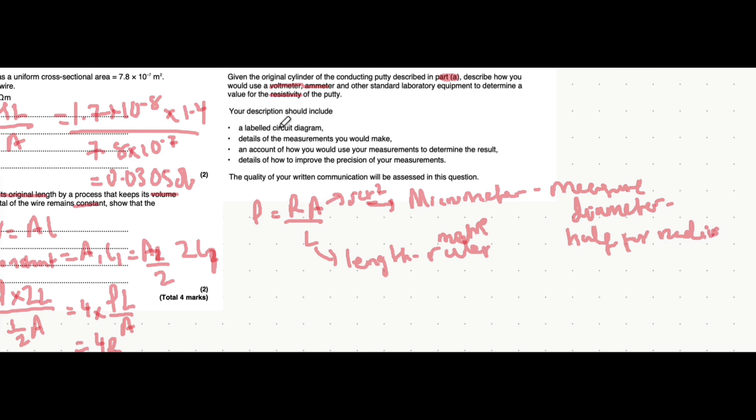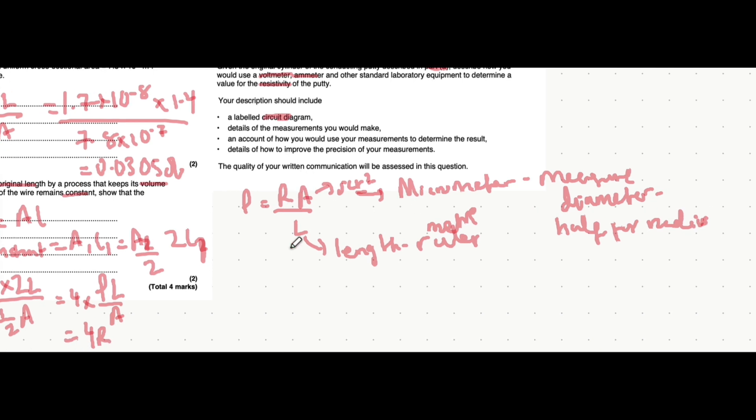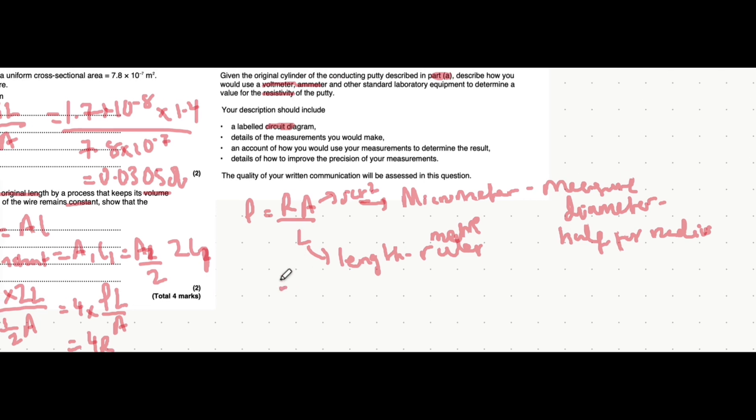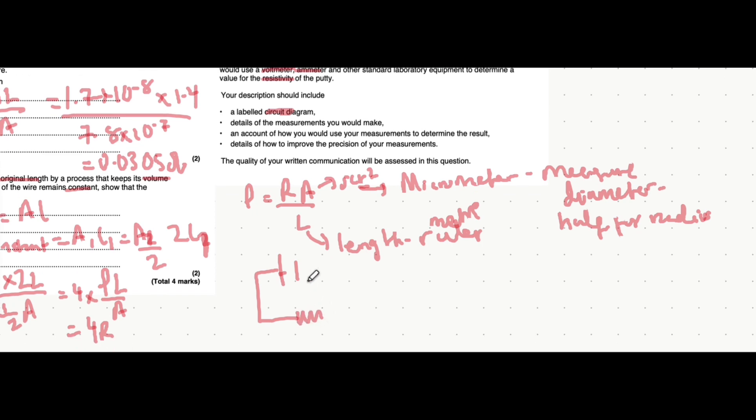That's that dealt with. How about resistance? Well, that's where the labeled circuit diagram comes in. Because, what we can do is, we can have the putty. Let's just say this is the putty. We connect an ammeter. We connect a voltmeter parallel to the putty. We measure the voltage against current. So, let's do the rest of this in text.